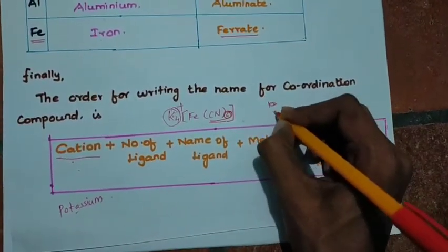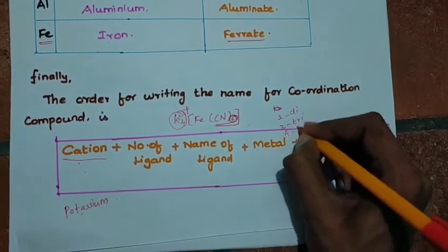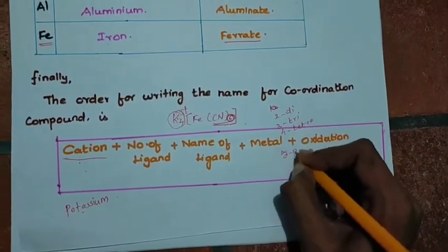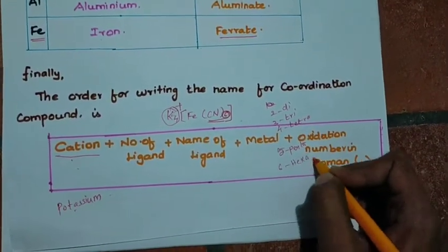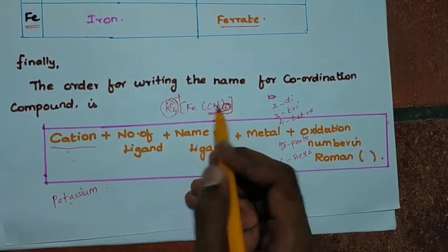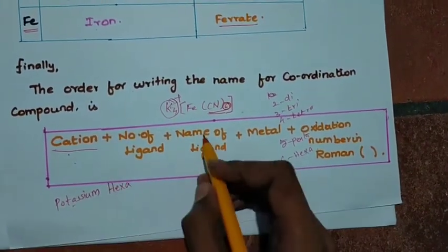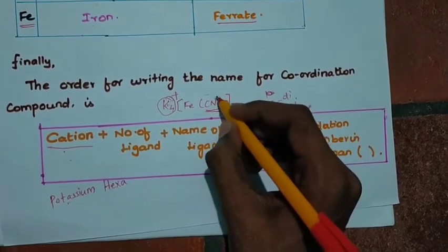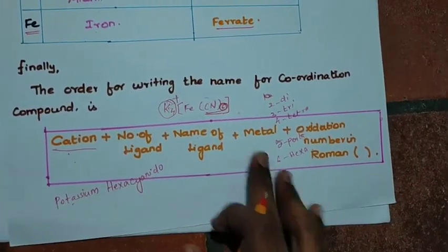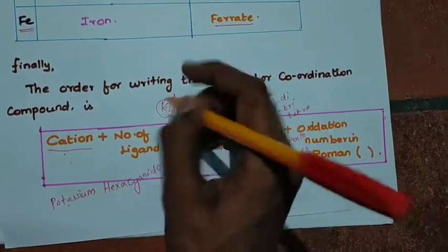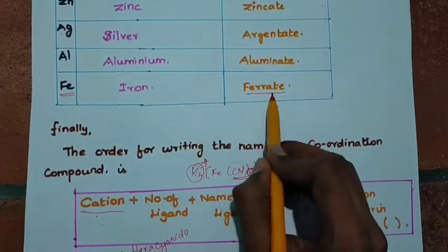The numerical prefixes are: 1 = mono, 2 = di, 3 = tri, 4 = tetra, 5 = penta, 6 = hexa. We have 6 cyanide ligands, so we say 'hexa'. Then the name of the ligand: cyanide becomes 'cyanido'. Then the metal — iron. Since this complex is negative, iron is called 'ferrate'.